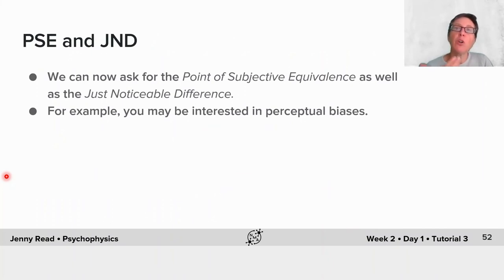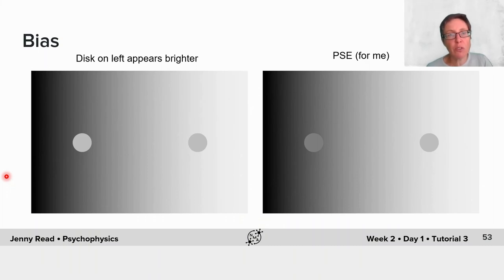When you're doing that, it makes sense to ask for the point of subjective equivalence, as well as the just noticeable difference. For example, you might be interested in perceptual biases. I'm sure you've seen optical illusions like this lots of times before. If I ask you which is brighter, you're probably going to say that the disc on the left appears brighter to you.